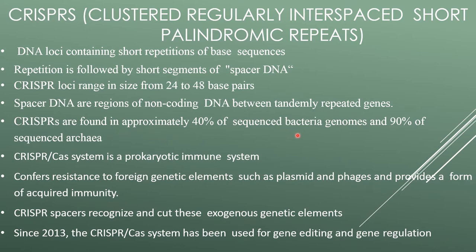CRISPRs are found in approximately 40 percent of sequenced bacterial genomes and 90 percent of sequenced archaea. The CRISPR-Cas system in prokaryotes is a prokaryotic immune system that confers resistance to foreign genetic elements such as plasmids and phage, and provides a form of acquired immunity. CRISPR spacers recognize and cut these exogenous genetic elements.